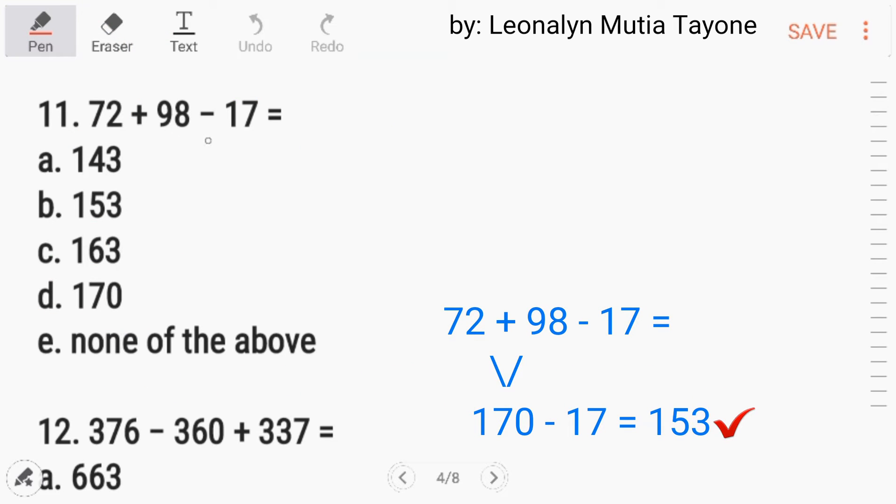Number 11, 72 plus 98 minus 17. Dalawa ang operation dito. So we will follow the order of operation. Yung order of operation, step number 4. Kasi ang step number 1, parenthesis, walang parenthesis. Step number 2, yung mga indigest or exponent. Walang exponent dito. So step number 3, multiplication and division. Walang multiplication and division dito. So step number 4, addition or subtraction. Whichever comes first from left to right. Ang nauna ay addition. So unahin natin si addition. 72 plus 98 and that is 170. 170 minus 17 and that is 153. So the answer is 153.